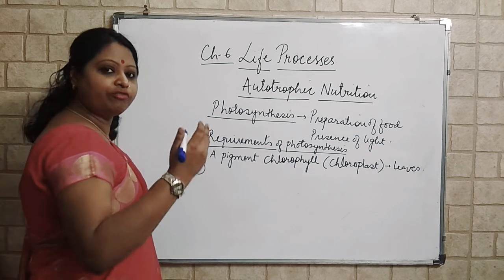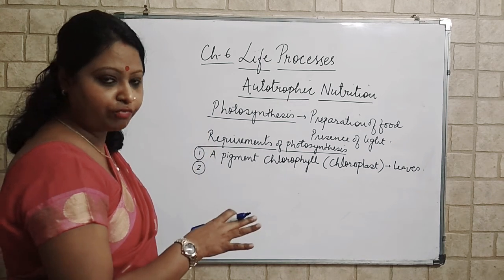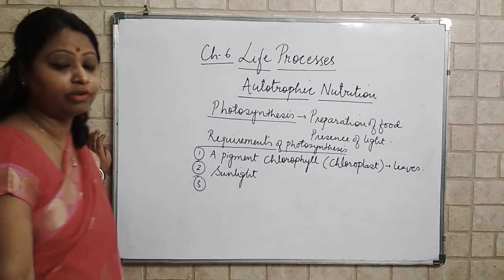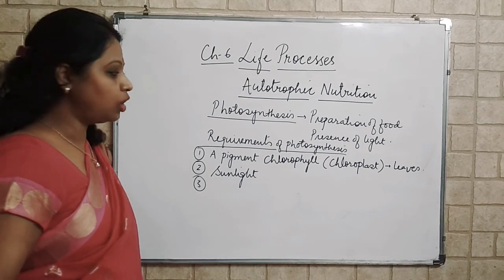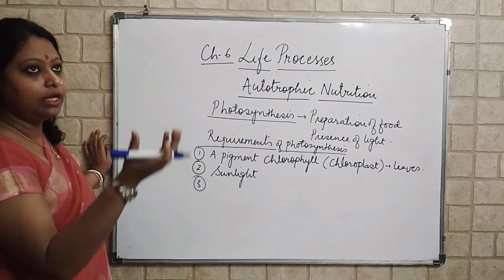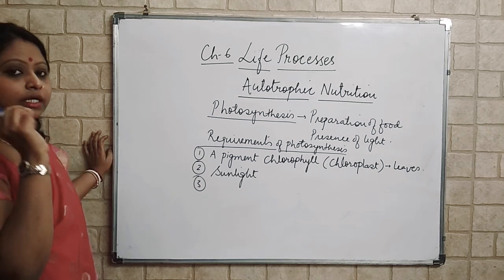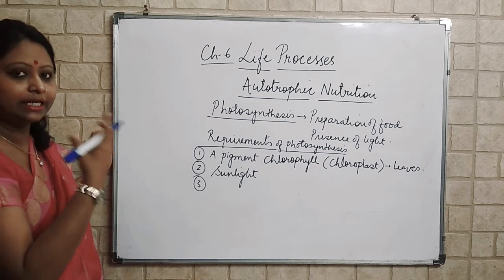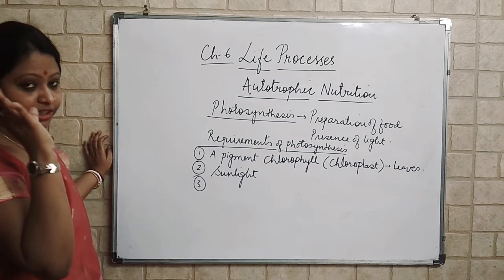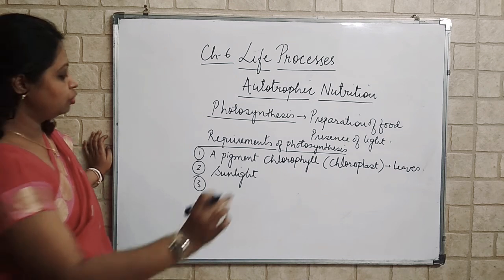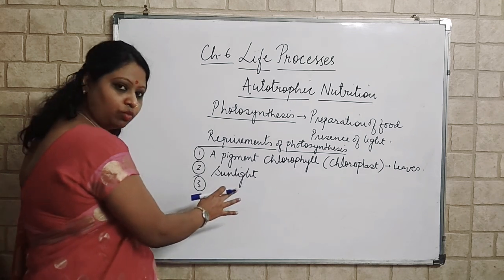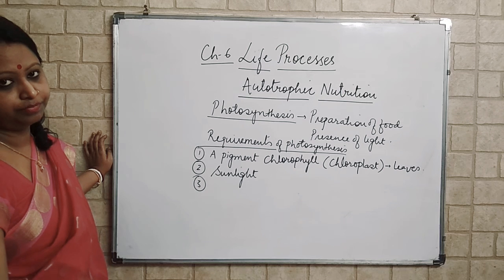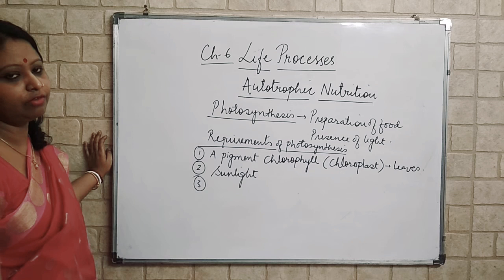The second requirement is a source of energy. In the case of plants, the natural source of energy is sunlight. It can also work with an artificial source of light, because this chlorophyll molecule absorbs solar radiation at certain wavelengths. If we can provide those wavelengths by any artificial source, then chlorophyll will get activated and start absorbing.